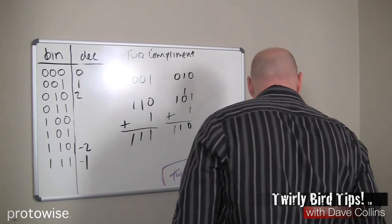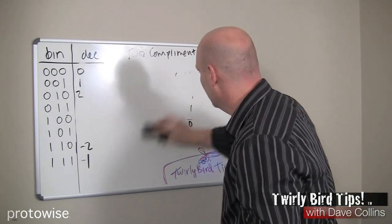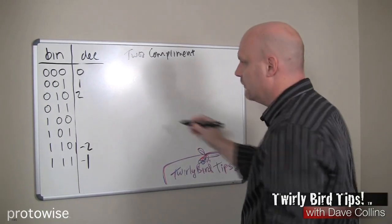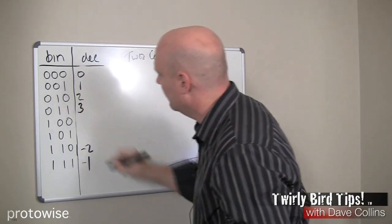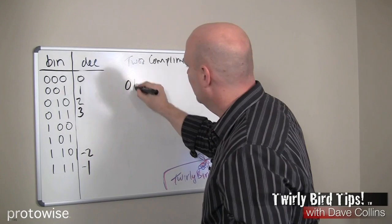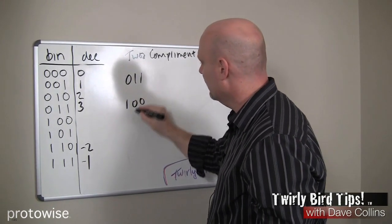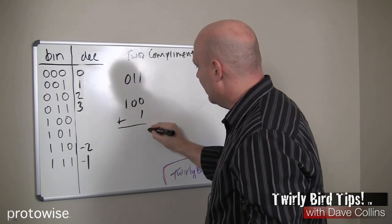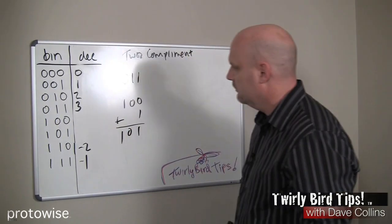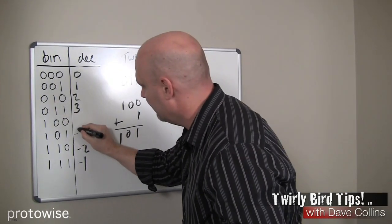Let's just do them all. Let's do 3. So 0, 1, 1 is a 3. To get the negative 3, we would flip the bits, 1, 0, 0, and add 1. So 1, 0, 1 would be a negative 3.